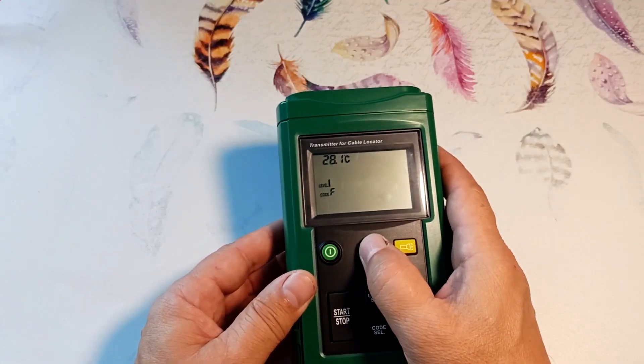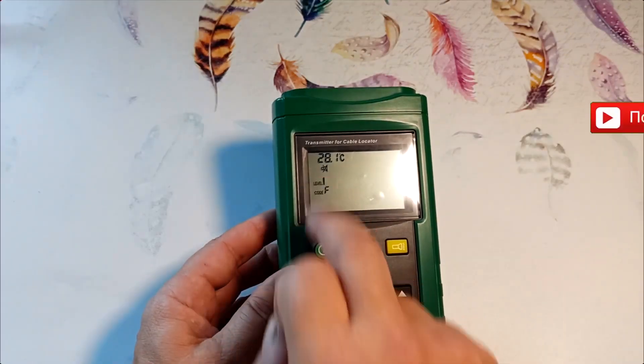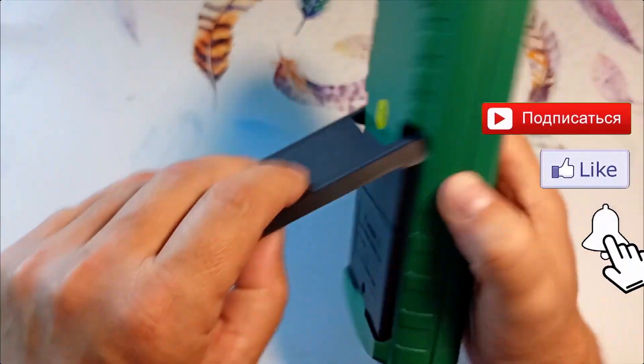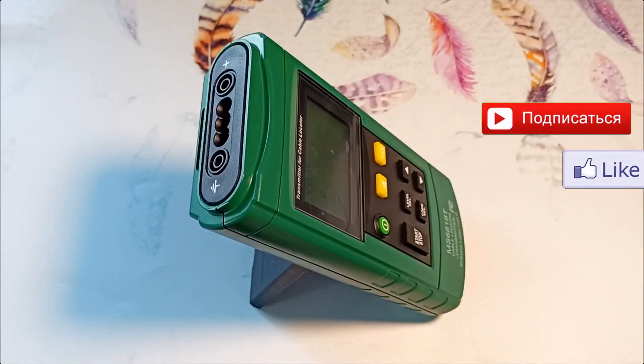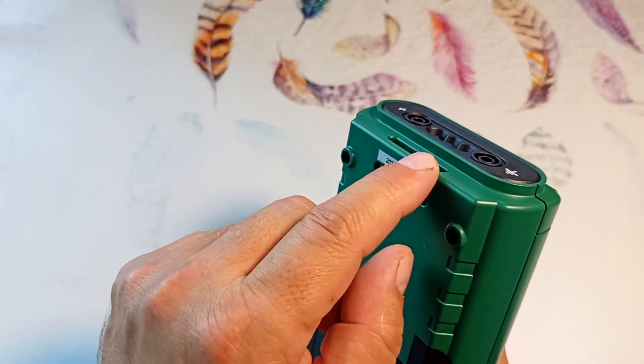If the sound signal bothers you, you can turn it off with this key. This indicates that the signal is turned off. The generator has a convenient stand. You can install a generator like this. There is also a place where you can thread a ribbon and hang the generator in a convenient place.